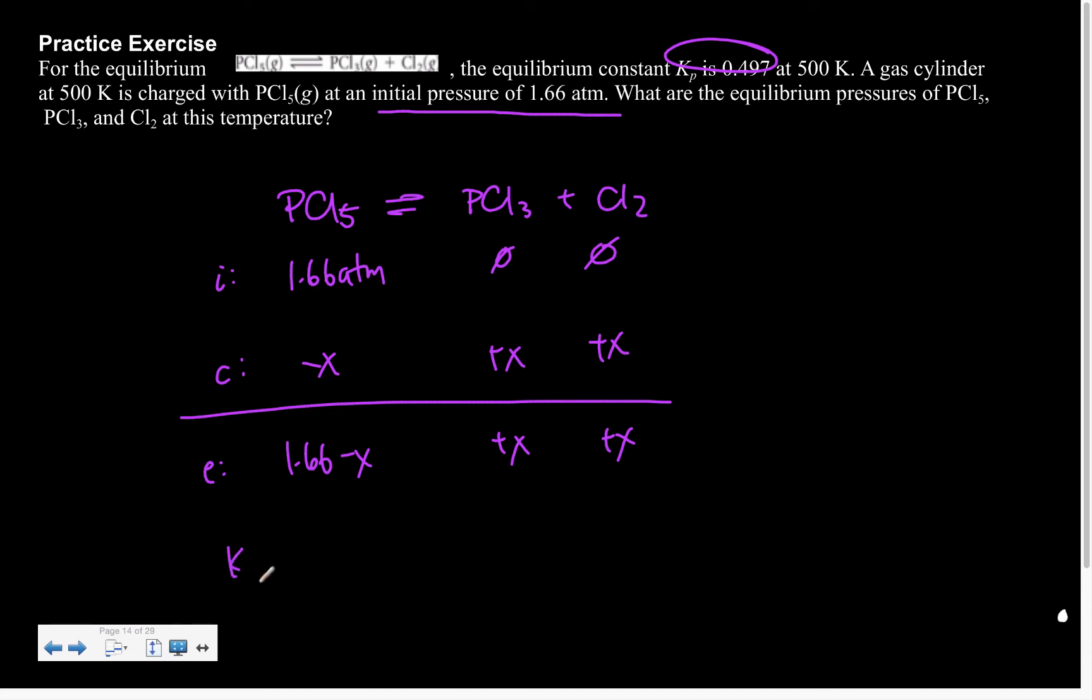Now, if I think about my K expression, I know that K is equal to PCl3 times Cl2 over PCl5. And currently, based on what I know, that's going to be x times x over 1.66 minus x. And all of that's going to be equal to my K value that I already know. So we would set all of this up.